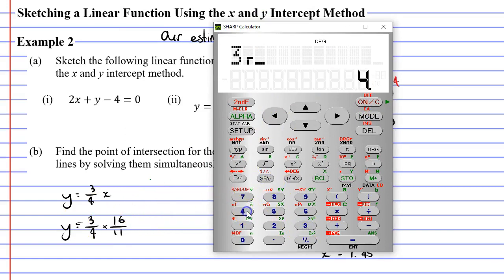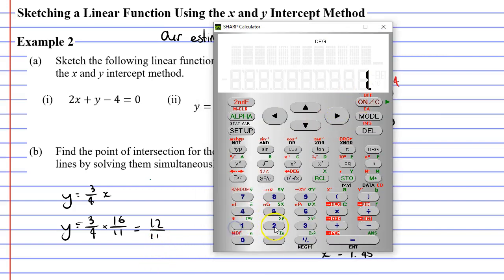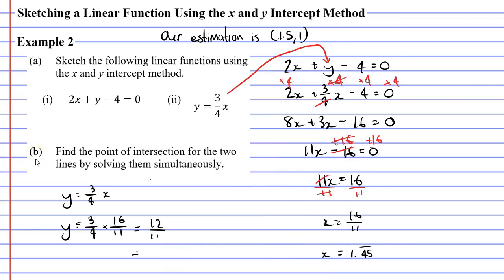The good thing about the calculator is it will simplify the fractions. We have 3/4 times 16/11 and we get 1 and 1/11. When you reach this advanced level of mathematics we prefer improper fractions as a solution. We get the solution 12/11. Markers prefer answers given as a fraction but we'll find the decimal anyway. 12 divided by 11 gives us 1.09 continuous. Looking at our estimation we estimated x to be 1.5 which was very close, and y to be 1 which is very close to what we got.